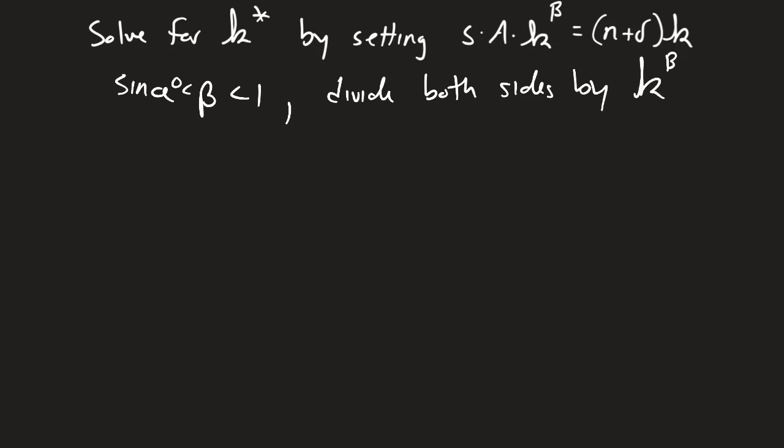And what do I mean by that? Well, remember that I have s times a times k to the beta equals n plus delta times k. So I'm going to divide both sides by k to the beta. Those k's to the beta will cancel.